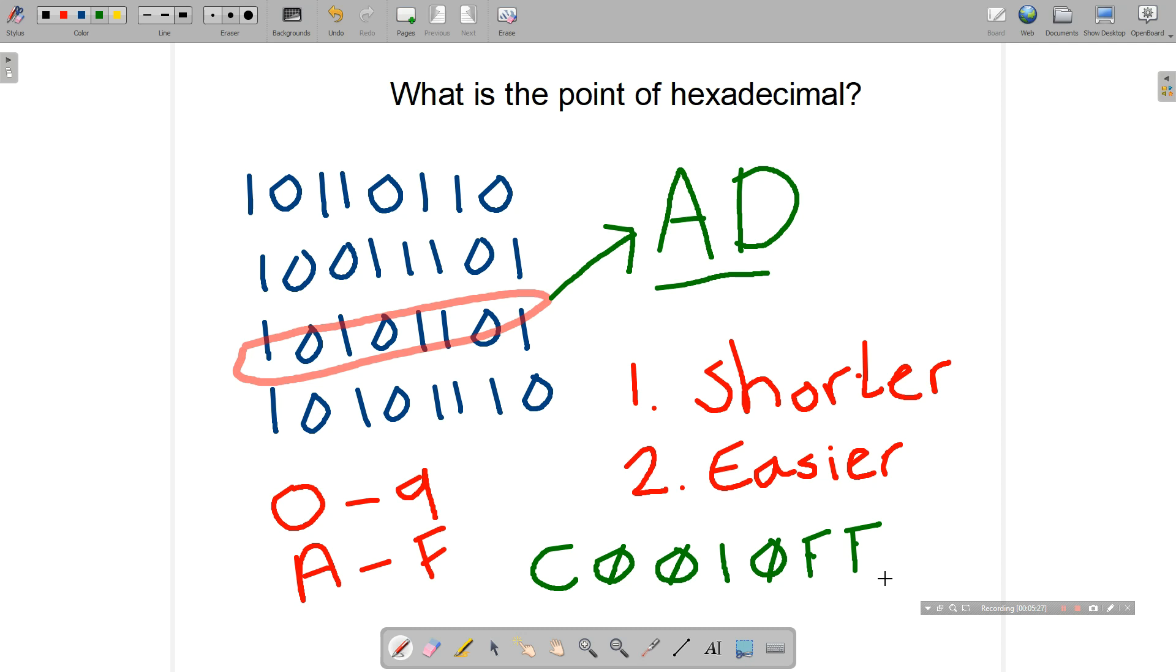So hexadecimal is shorter and it is easier to read and write, reducing the chances of errors.